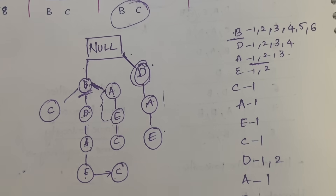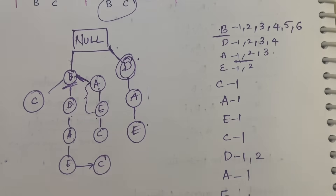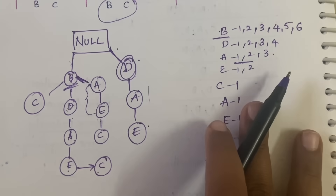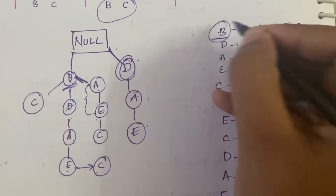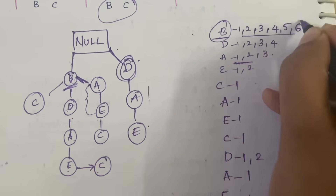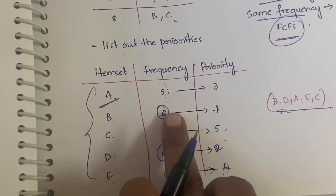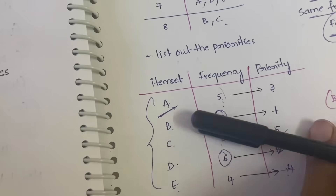To summarize: first list out the priorities, then rearrange the items in the question according to priorities, and then construct the tree. Now, why did we write the occurrences? This is to check whether you got the answer correctly. For example, B appears only once in the tree and its total occurrence count is 6 — check the frequency of B in the question, and frequency of B is 6. They match, so it is correct.